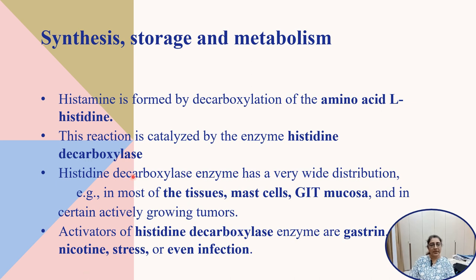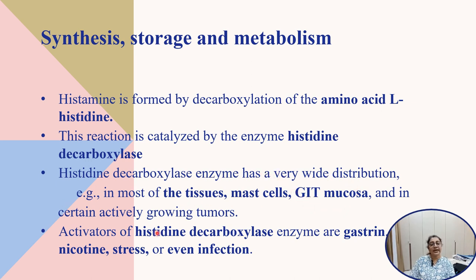Histamine is formed by decarboxylation of the amino acid L-histidine. L-histidine is present in food and is converted by the enzyme histidine decarboxylase. This enzyme is essential for the formation of histamine and is widely distributed in most tissues, including mast cells, gastrointestinal mucosa, and in certain actively growing tumors.